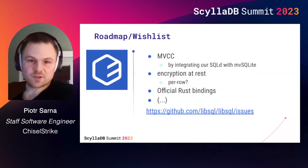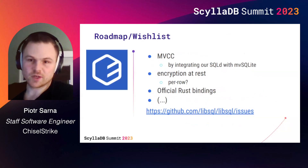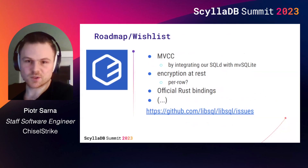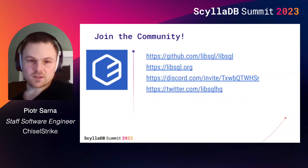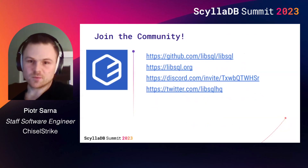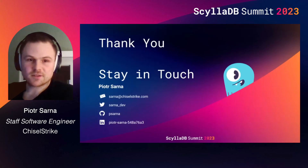There are also more features we're after: introducing multi-version concurrency control is one, exploring how we can introduce conflict-free replicated data types (CRDTs) is another, and we plan to provide official Rust bindings to make it easier to integrate with existing Rust projects, among countless other ideas. LibSQL is open source and open to contributions, so I cordially invite everyone to join the community. All kinds of contributions are welcome. Thanks, everyone.